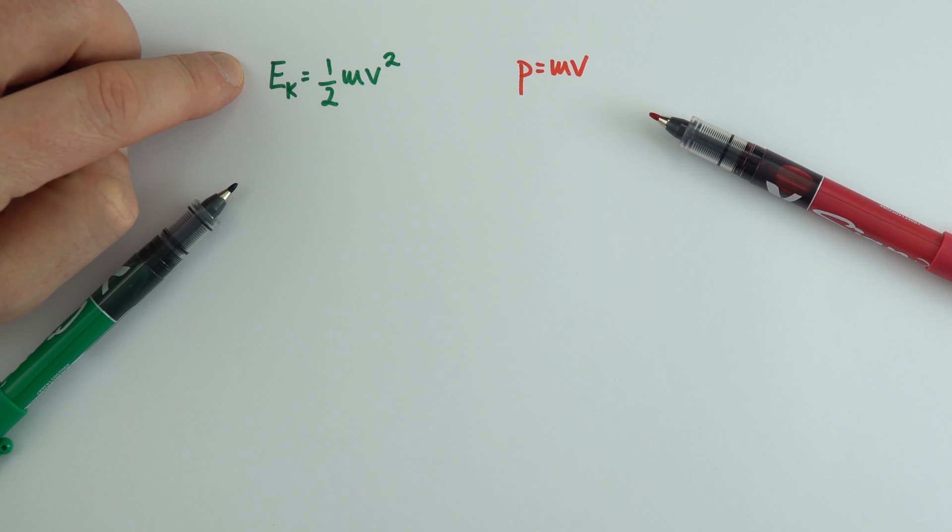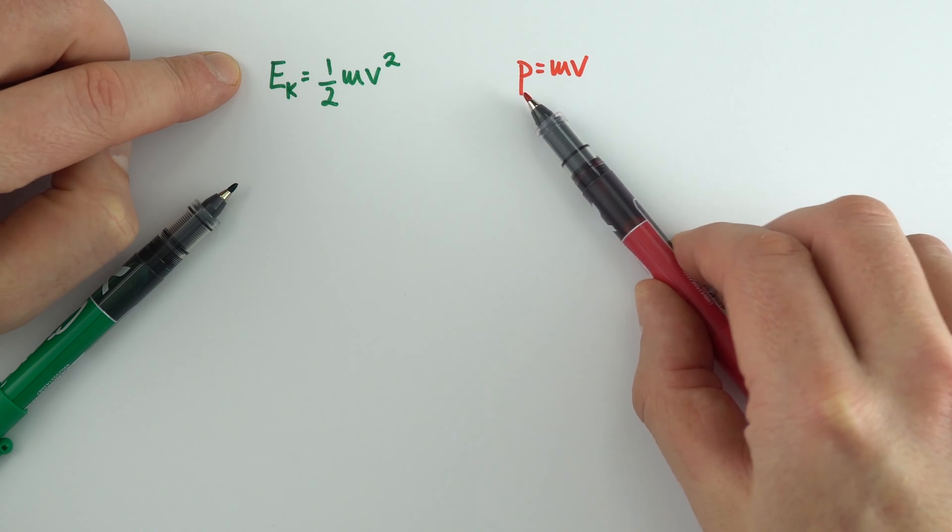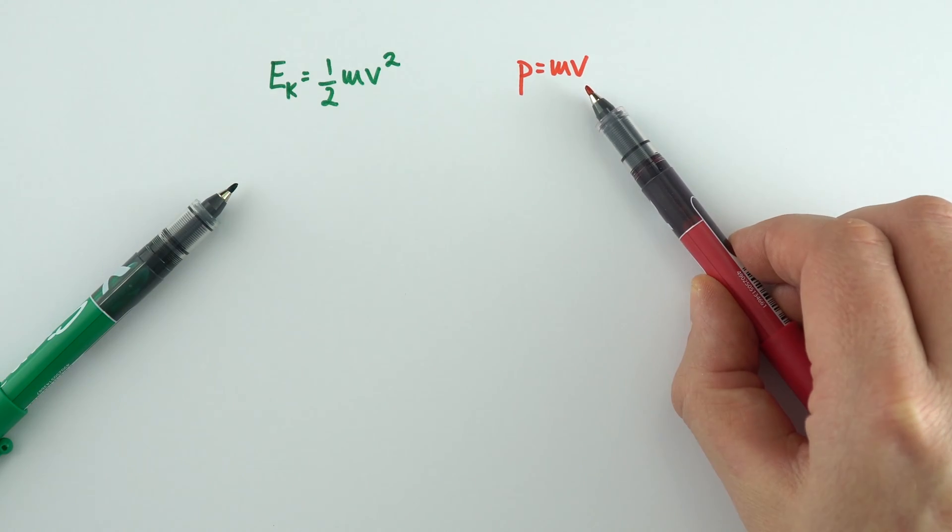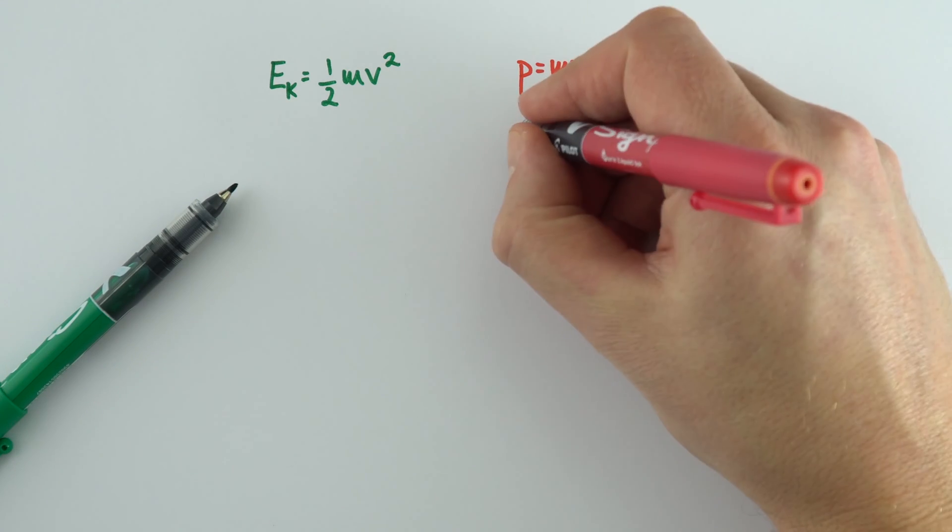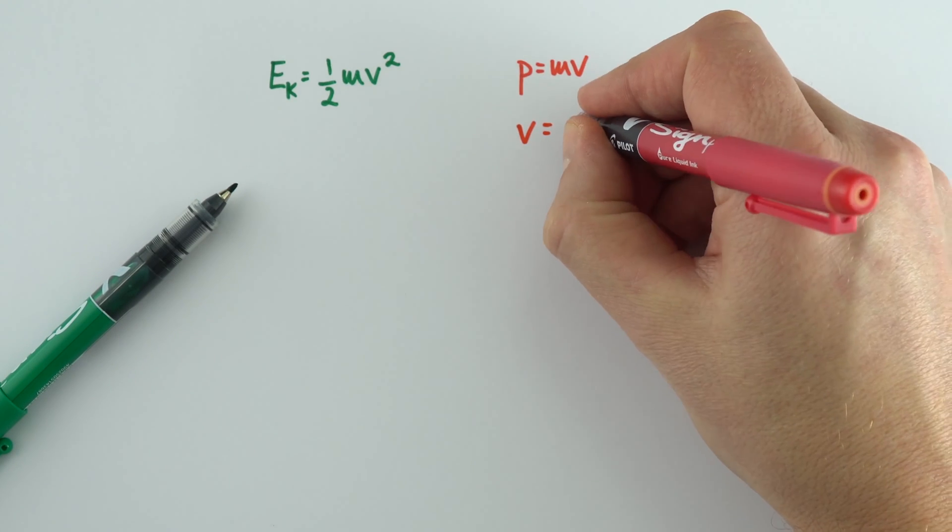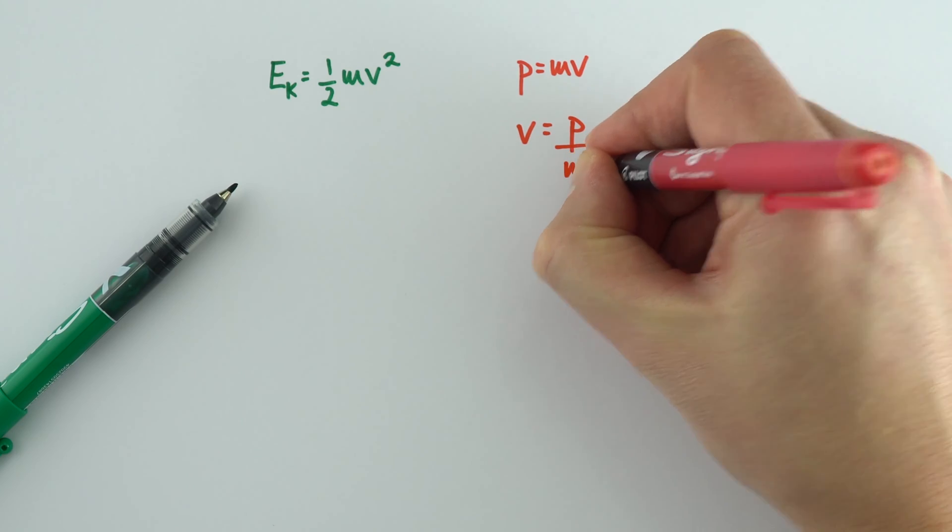If we have a moving object, we can calculate its kinetic energy from Ek = 1/2 mv² and its momentum p = mv. Now we can also rearrange this to say that v = p/m.